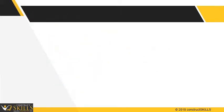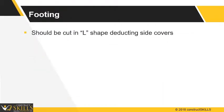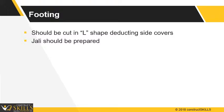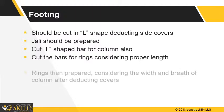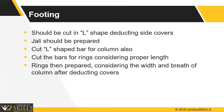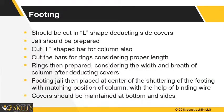One can follow the steps for a particular job of bar bending, cutting, and placing. For footing, bars should be cut in L-shapes after deducting the side cover, and Jali can be made from those bars. Cut L-shaped bars for columns also. Cut bars of the respective diameter for rings of columns considering proper length. Rings are then prepared from cut bars considering the width and breadth of the column after deducting covers. The prepared footing Jali is then placed in position after matching the center of the column by maintaining bottom and side covers.